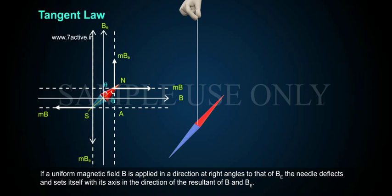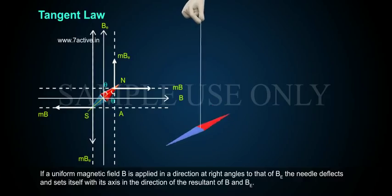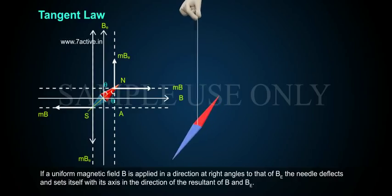If a uniform magnetic field B is applied in a direction at right angles to that of BE, the needle deflects and sets itself with its axis in the direction of the resultant of B and BE.